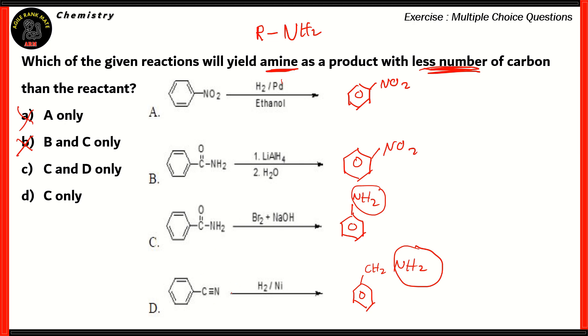Now, in equation D, you have benzonitrile, and in benzonitrile, there are seven carbons. The same is true for the product. So, that means the amine product has the same number of carbon atoms, which means that it's not the reaction that will yield less number of carbon. So, option C is incorrect because it contains equation number D.